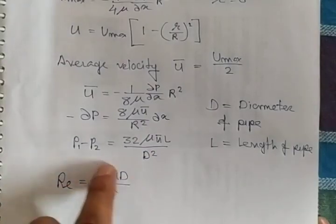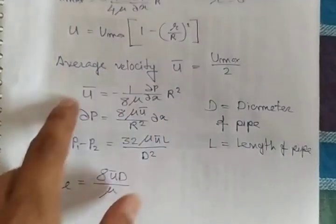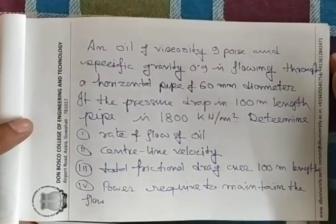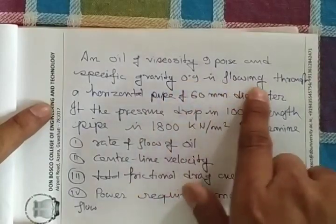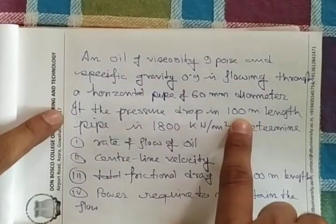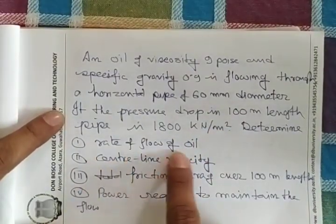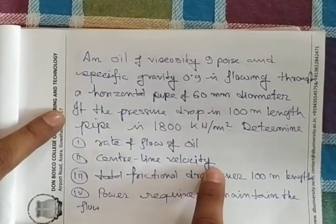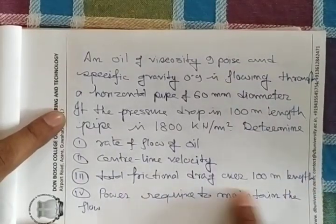Reynolds number equation is used to solve the problem. Let's start one problem: an oil of viscosity 9 poise and specific gravity 0.9 is flowing through a horizontal pipe of 60 mm diameter. If the pressure drop for 100 meter length pipe is 1800 kilo Newton per meter square, determine: rate of flow of the oil, central line velocity, total frictional drag over 100 meter length, and power required to maintain the flow.